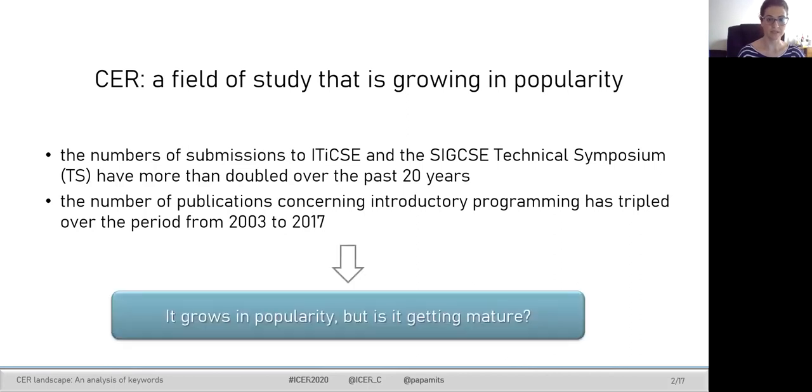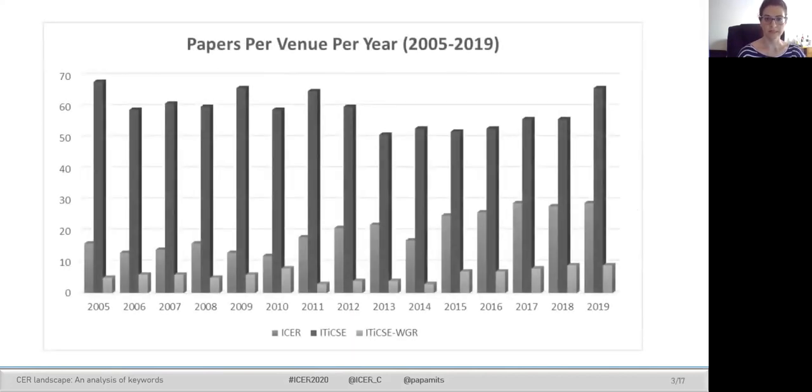Thus, the question is: is computing education research turning into a mature and respectable field? Over the past 15 years, more than 1,200 peer-reviewed papers were published in ICER, ITICSI, and ITICSI working group reports.